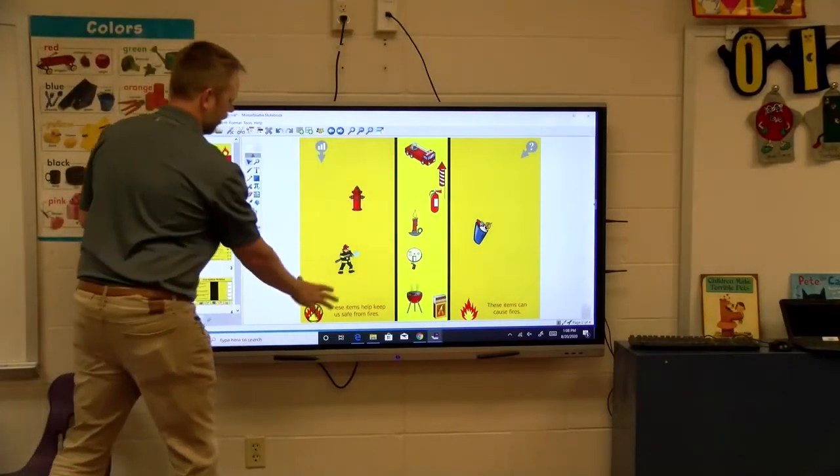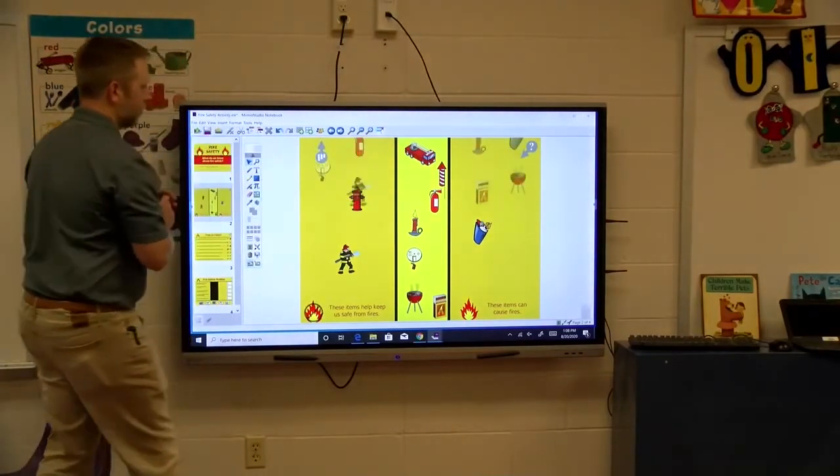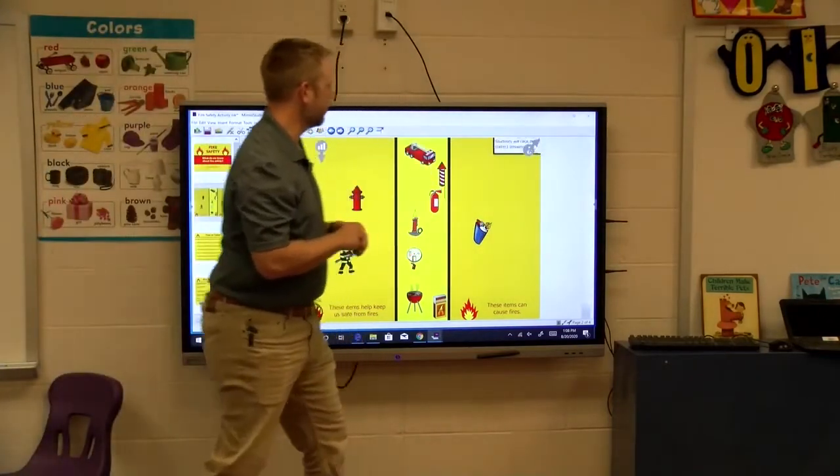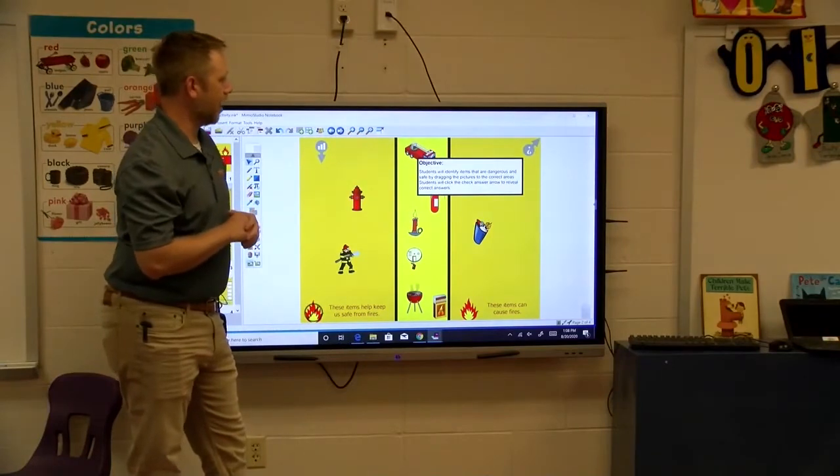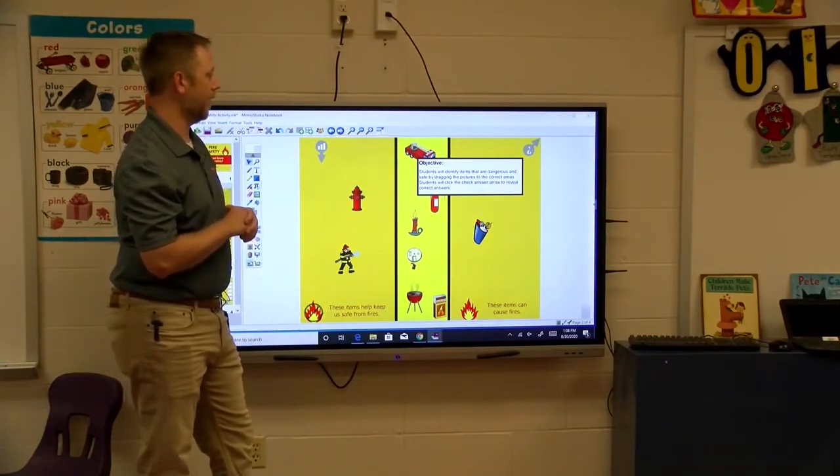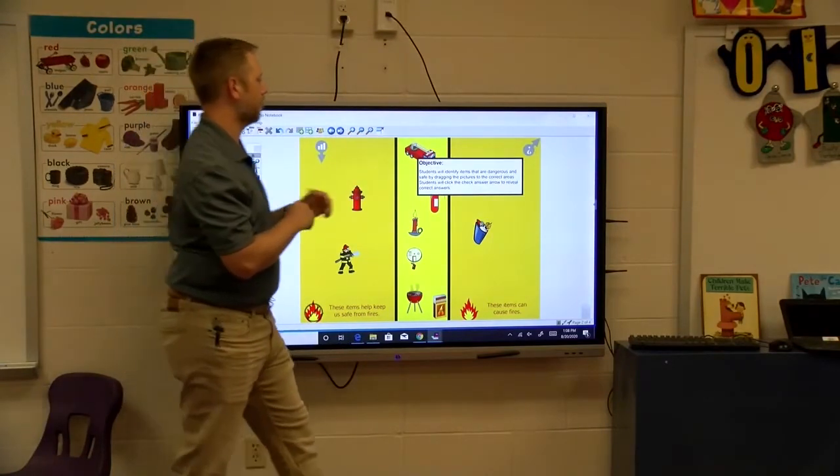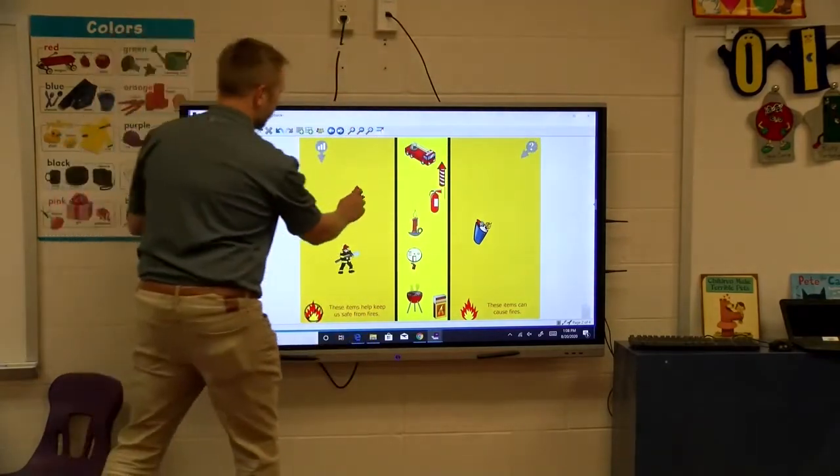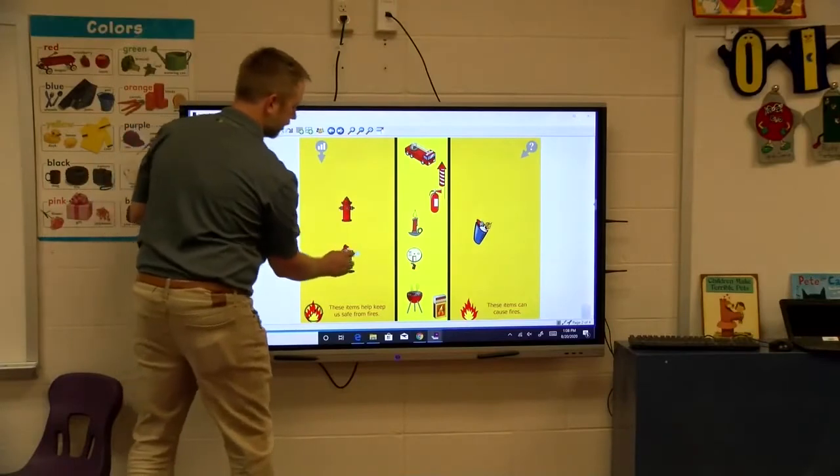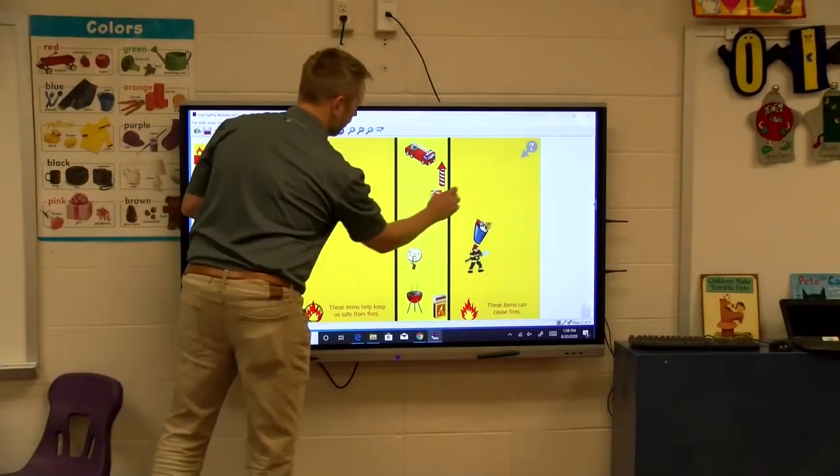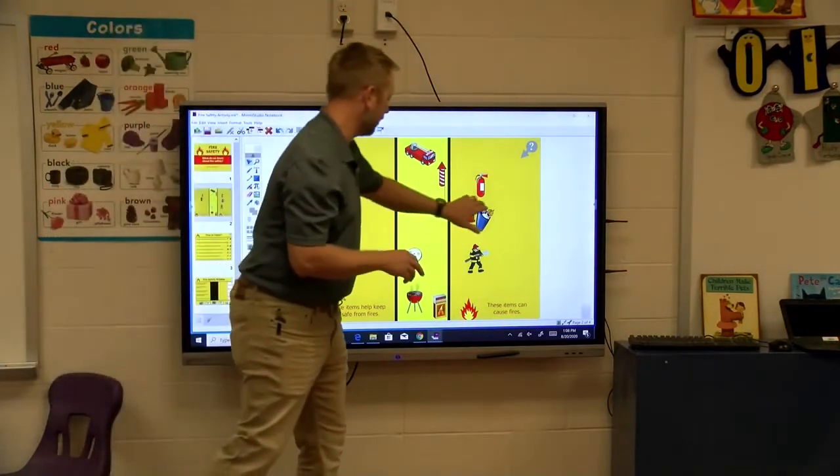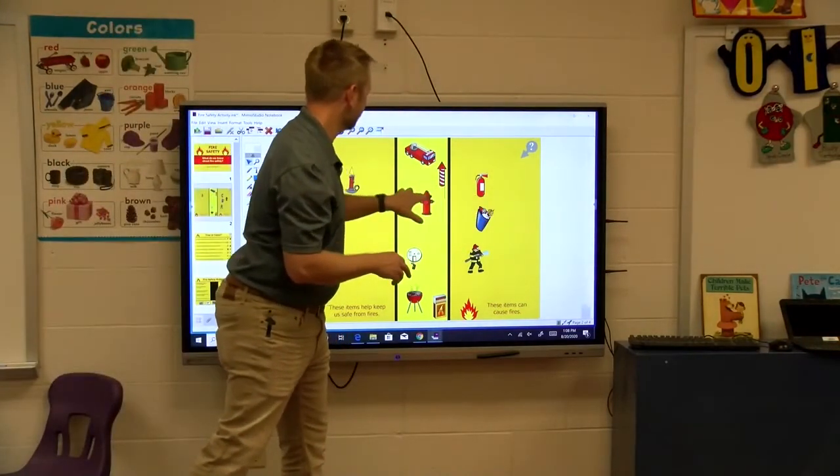So, I'm going to give you some examples. This little fire safety thing shows a few different examples of things that are interactive. They're always going to usually have a little button that gives you an answer key and another button that gives you the question. So objective, students will identify items that are dangerous and safe by dragging the pictures to the correct areas. So you put these all in a little bank and the students can decide if they're dangerous, safe, whatever they are. In fact, I'm not going to even take the time to look at what I'm doing. I think a fire hydrant probably is pretty safe.